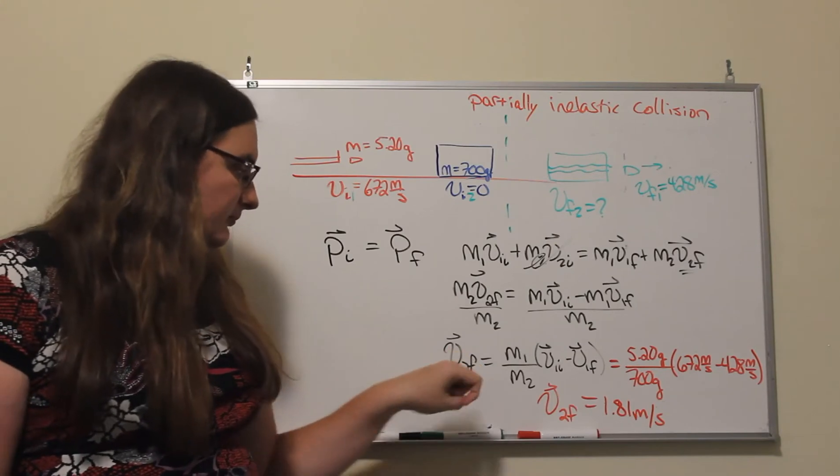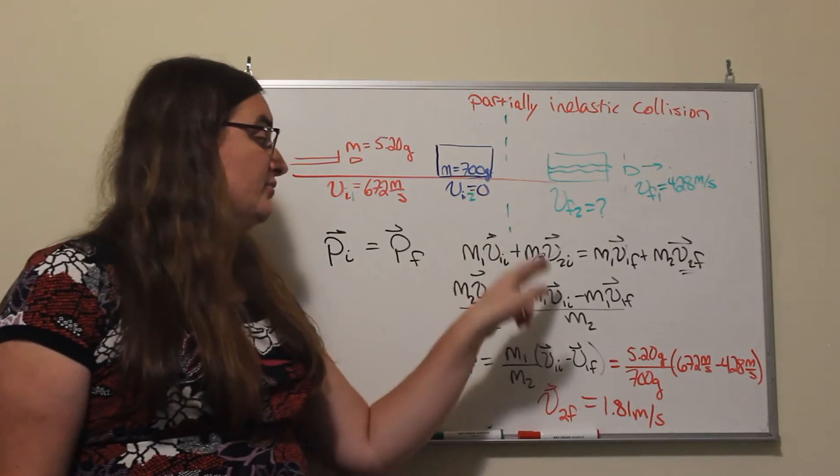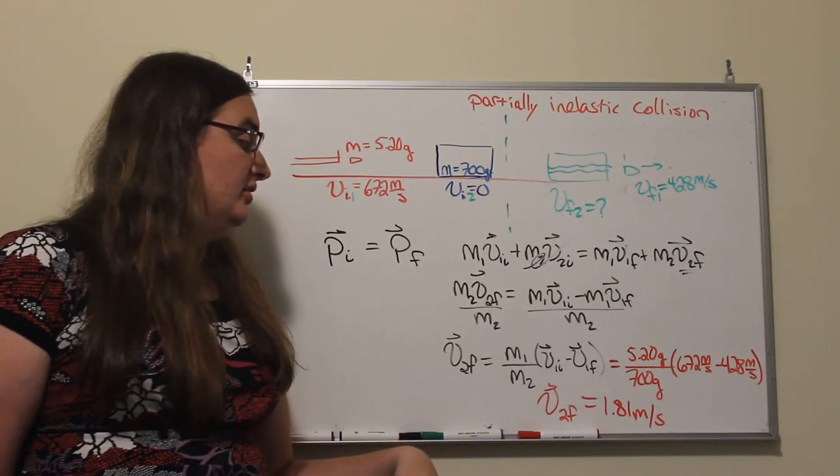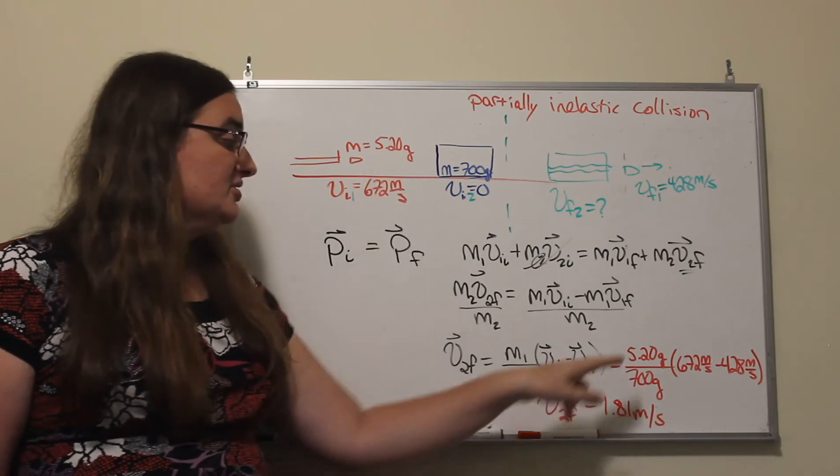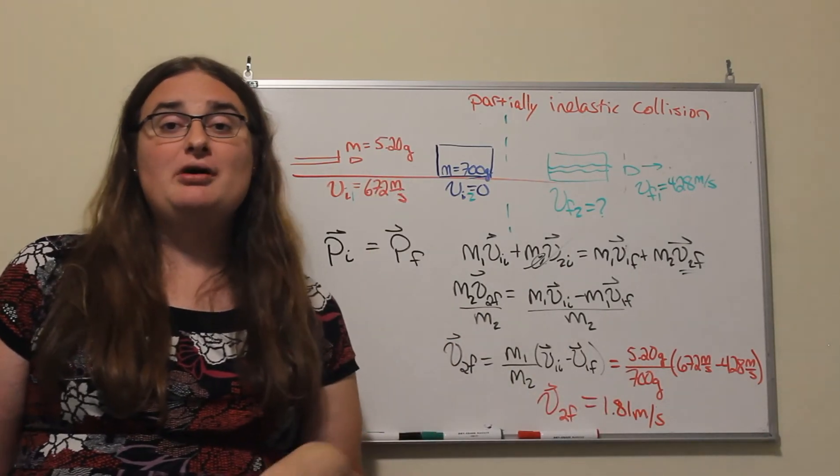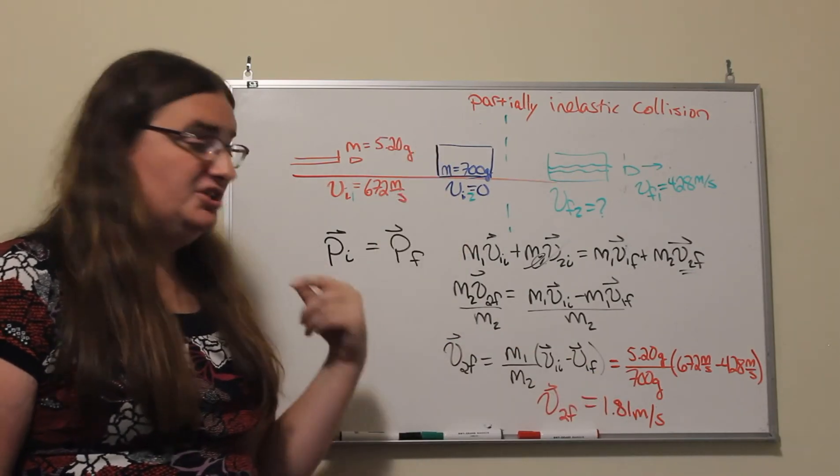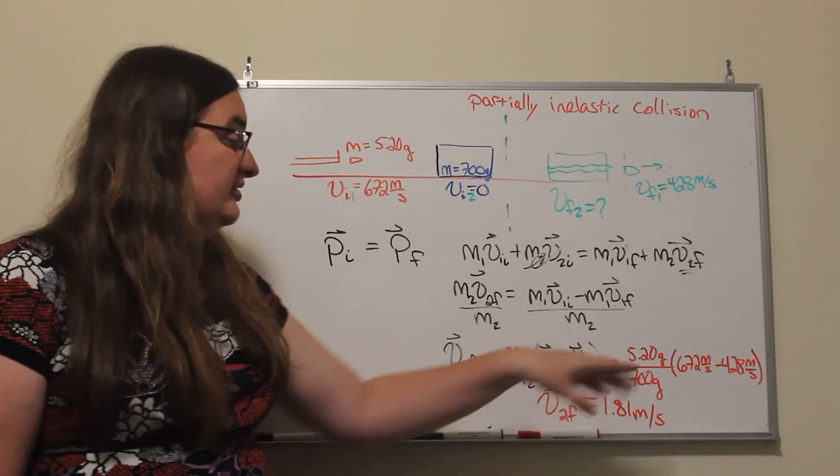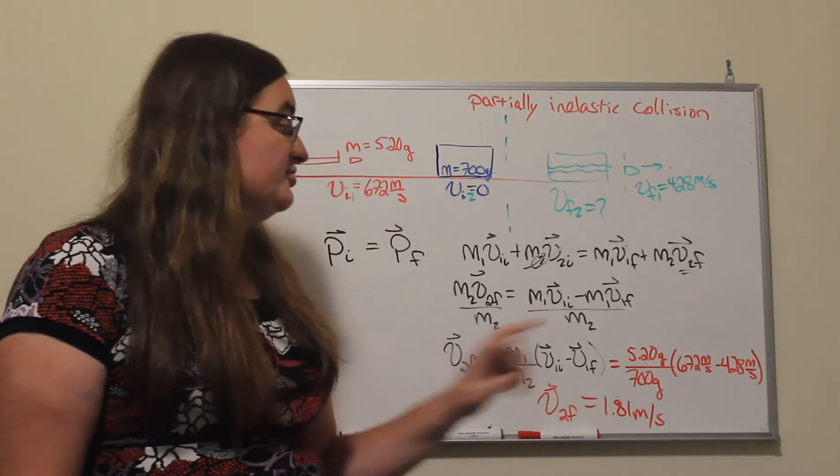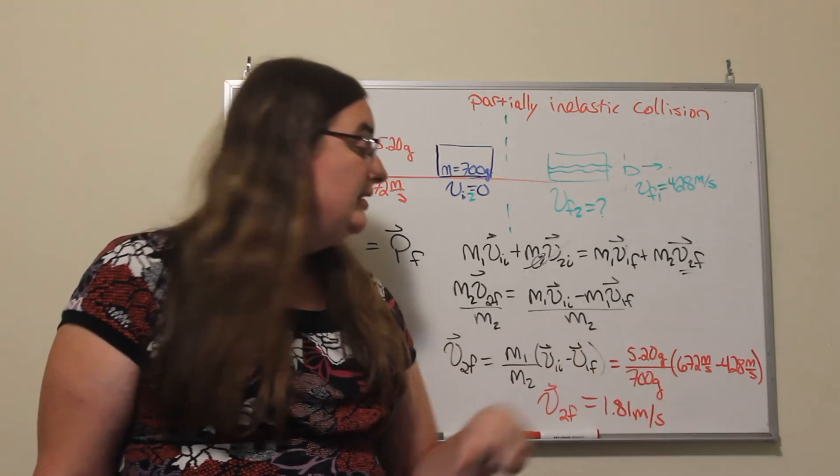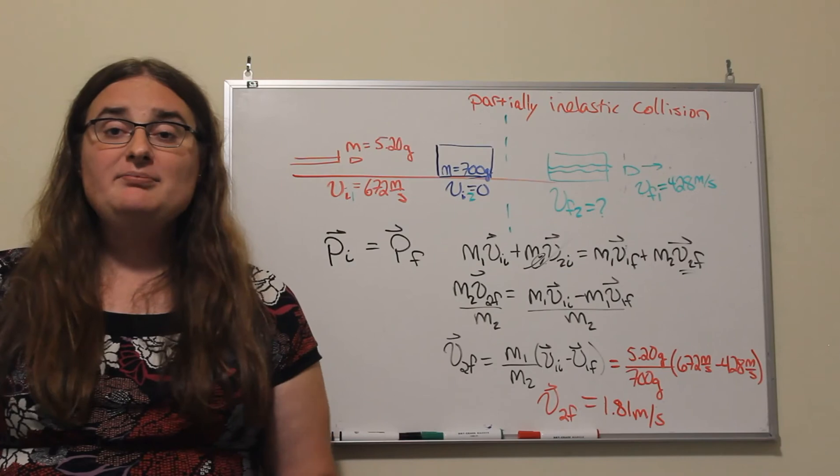For the final velocity of object two, we can factor out the mass of the projectile. So we have the mass of the projectile, 5.20 grams, divided by the mass of our initially stationary object, 700 grams, times v1 initial which is 672 meters per second, minus v1 final which is 428 meters per second.